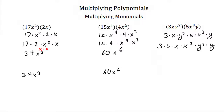3 times 5 is 15. x times x cubed — remember, add your exponents, and x is to the 1 — so this will be x to the fourth. And then y squared times y to the 1 would be y cubed. So our answer then would be 15x to the fourth y cubed.